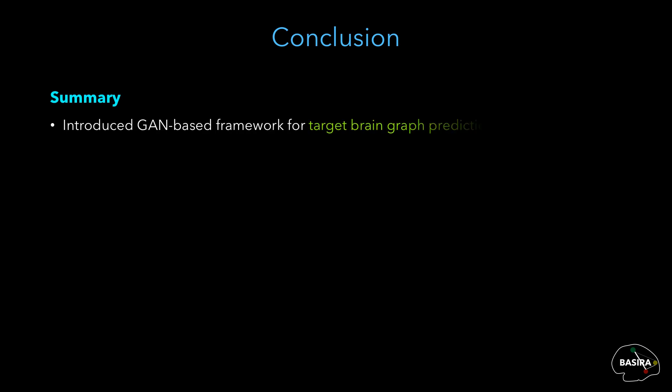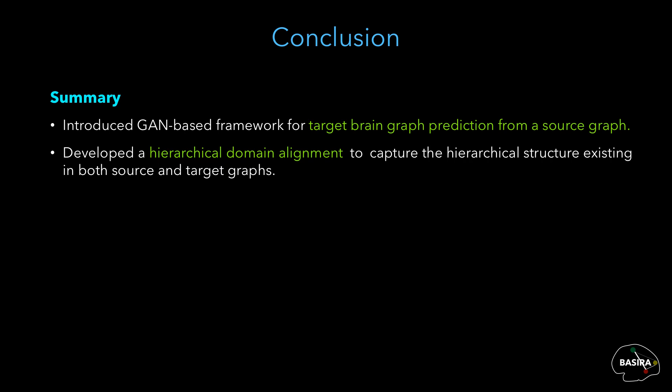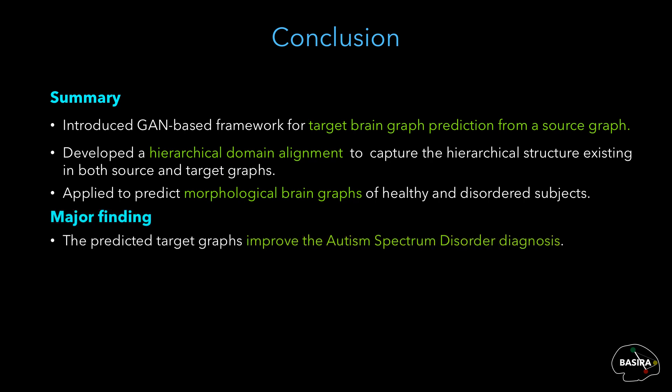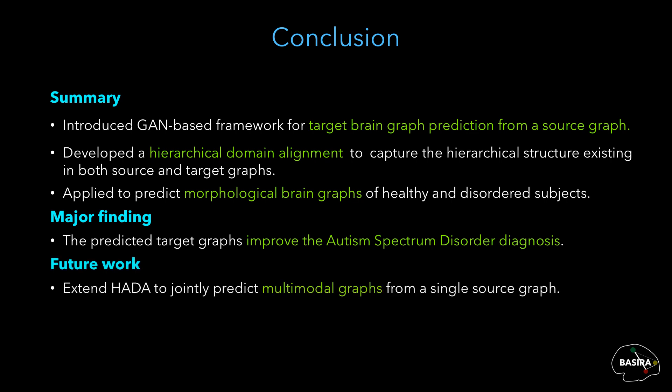We introduced in this work a GAN-based framework for target brain graph prediction from a source graph. We developed a hierarchical domain alignment to capture the hierarchical structure existing in both source and target graphs, and applied it to predict morphological brain graphs of healthy and disordered subjects. We showed that the target graphs predicted from our HEDA framework can improve autism spectrum disorder diagnosis. In the future, we aim to extend our framework to jointly predict multi-modal graphs from a single source graph, and evaluate its robustness to adversarial attacks.